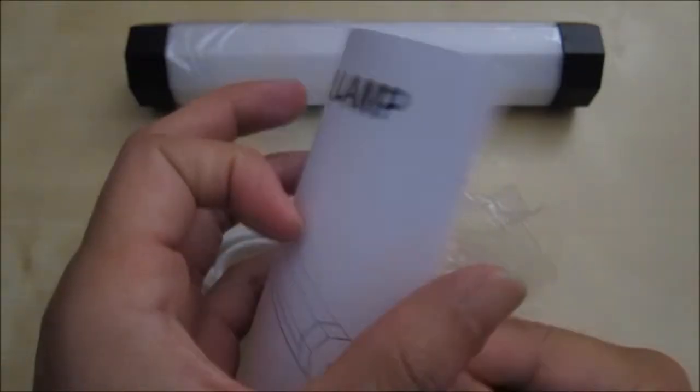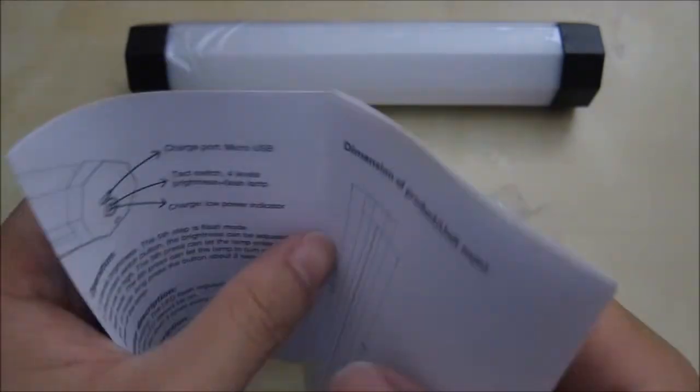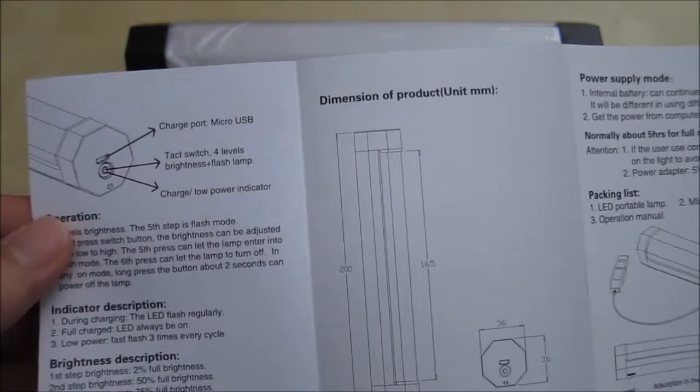So here's the user manual, a pretty small booklet. Inside you have some instructions on how to use it. It basically has 4 different brightness levels, and on the 5th level is basically a flashing mode.